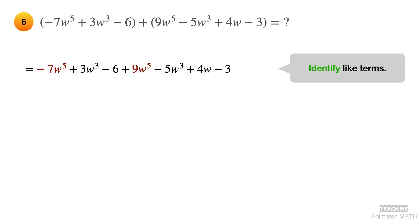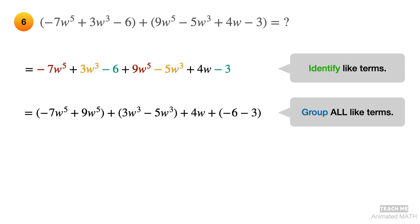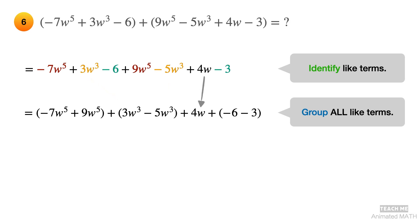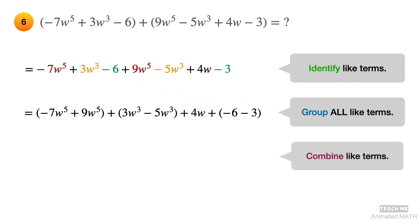Identify like terms. Terms with w raised to 5 are colored red. Terms with w cubed are colored yellow. And the constants are colored green. Next, group all like terms and arrange them in standard form. Group the terms with w raised to 5. Group the terms with w cubed. There is only one term with w. Group the constants. Last, combine like terms using addition and subtraction. And the final answer is 2w raised to 5 minus 2w cubed plus 4w minus 9.